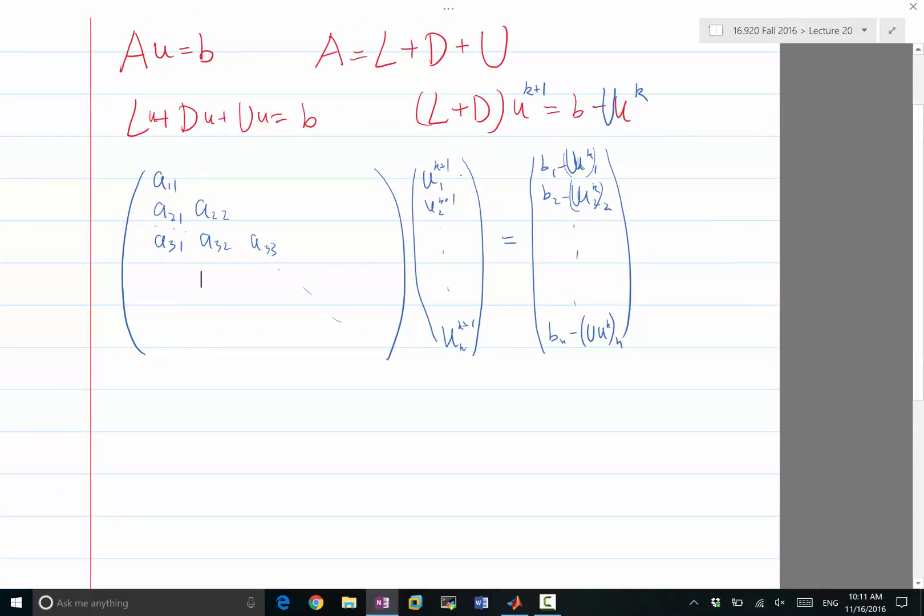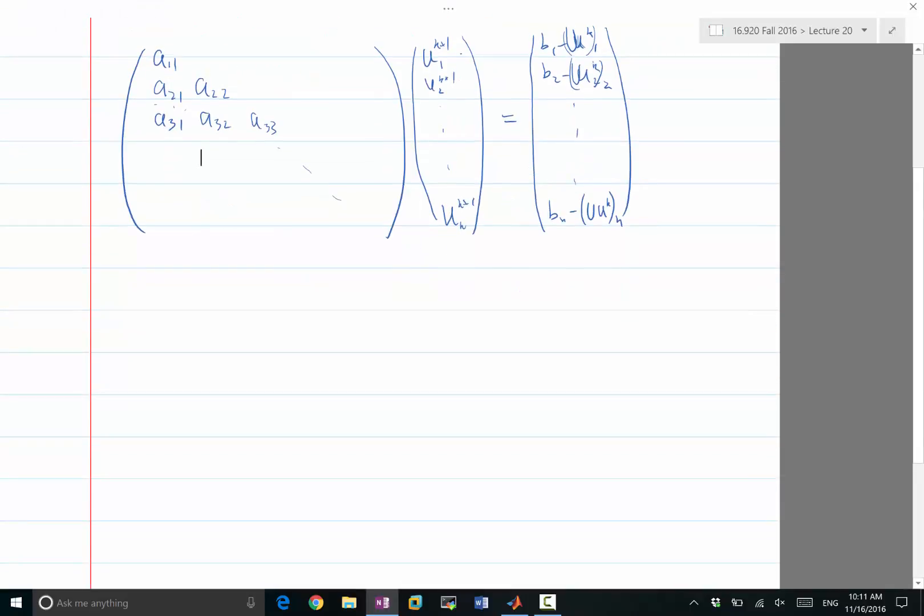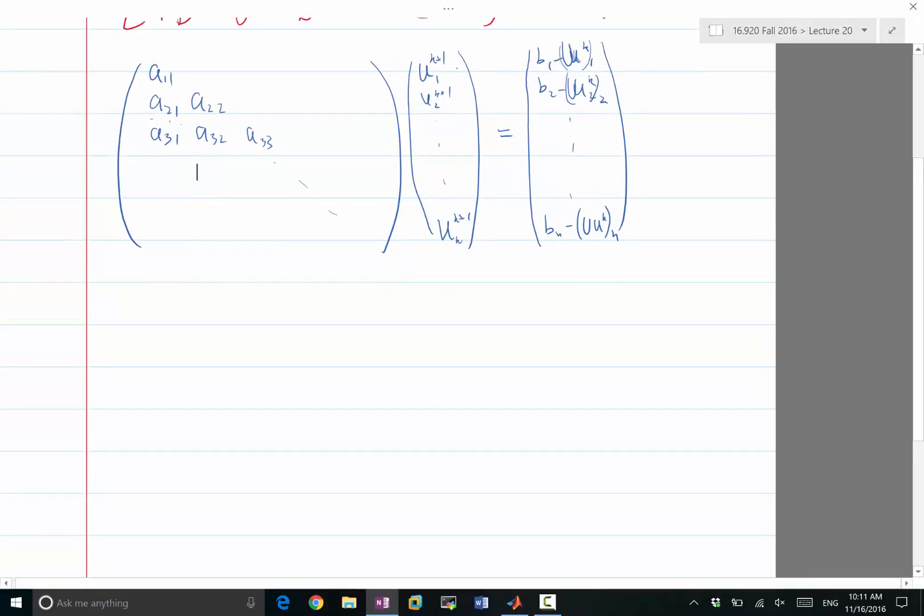So for example, let's see how we apply this to Poisson's equation. In Poisson's equation, we are solving (u_{i-1} - 2u_i + u_{i+1})/Δx² = b_i. And we would have k+1 here, k+1 here, because this is lower diagonal, and k here, right? As opposed to k both on i-1 and i+1, we now have k only at i+1, the upper diagonal part. And the lower and the diagonal part are now k+1.